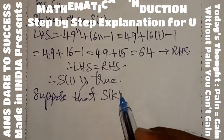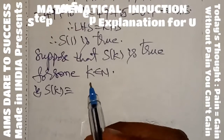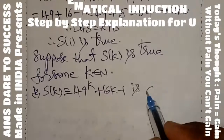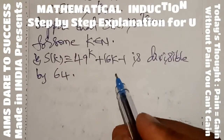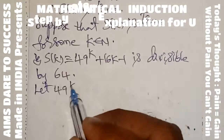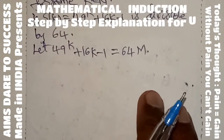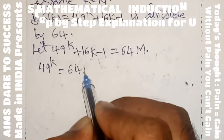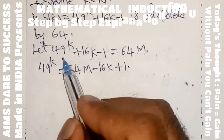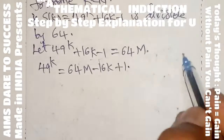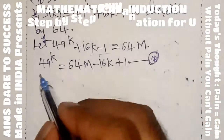Step 2: Suppose that S of k is true for some k belonging to N. That is, S of k means — substitute n equal to k in the given value — 49 power k plus 16k minus 1 is divisible by 64. We can write this as 64 into some constant m. Rearranging, 49 power k is equal to 64m minus 16k plus 1. Let this be equation (*).